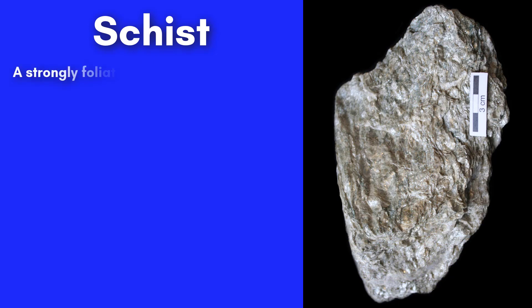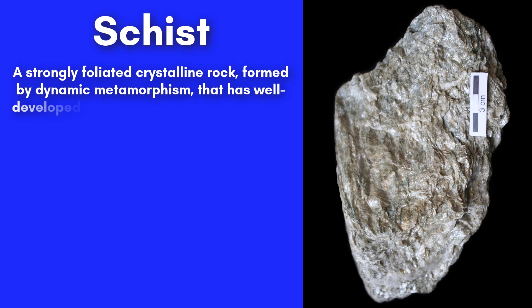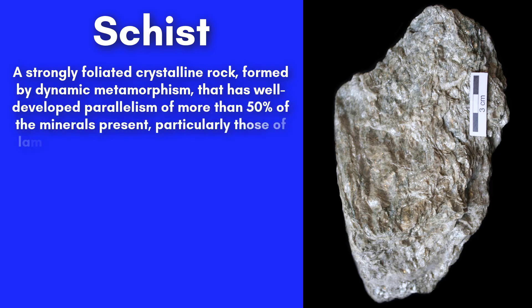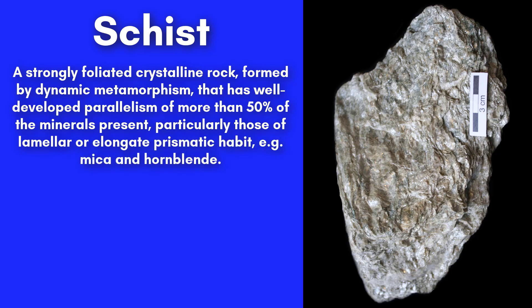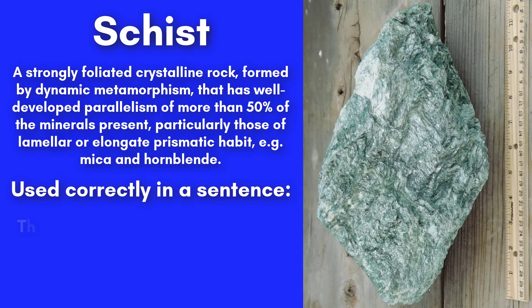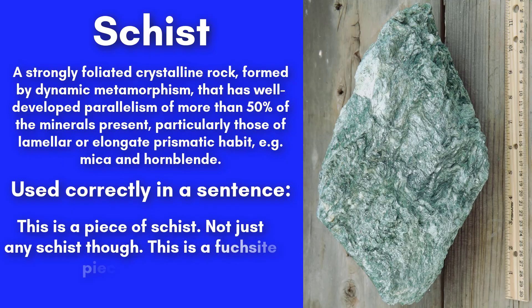Schist. A strongly foliated crystalline rock, formed by dynamic metamorphism, that has well-developed parallelism of more than 50% of the minerals present, particularly those of lamellar or elongate prismatic habit, e.g. mica and hornblende. This is a piece of schist. Not just any schist, though. This is a fuchsite piece of schist.